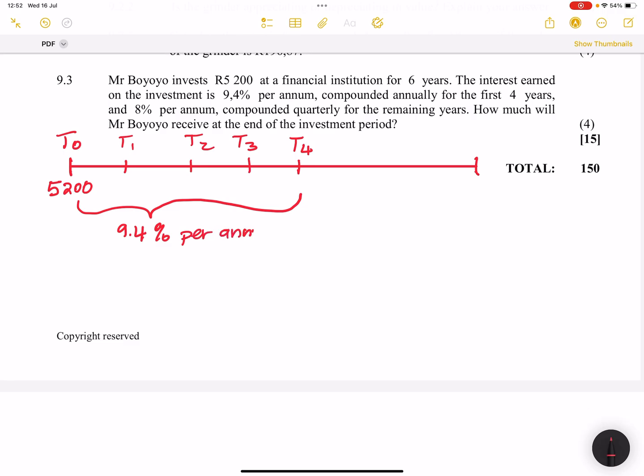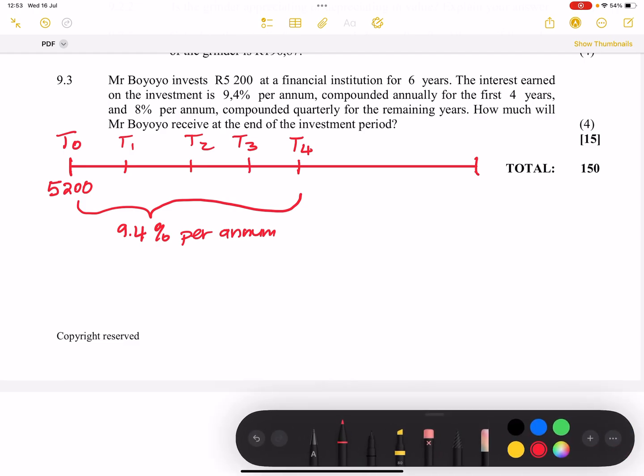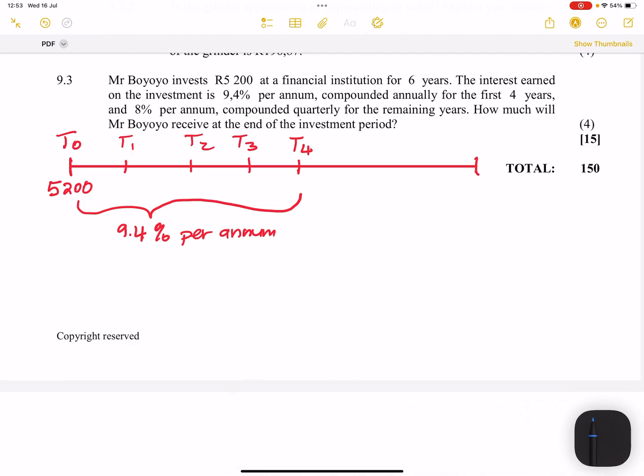And this is per annum. So they say, and 8% compounded quarterly. So that's for the remaining period. Remaining period, it's 8%. This is quarterly. Very important.